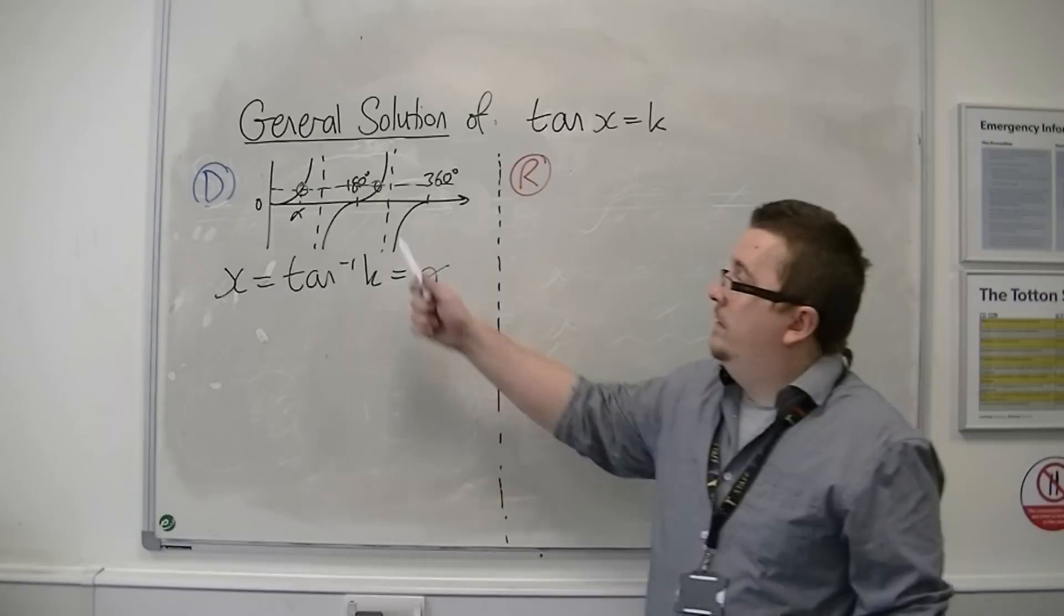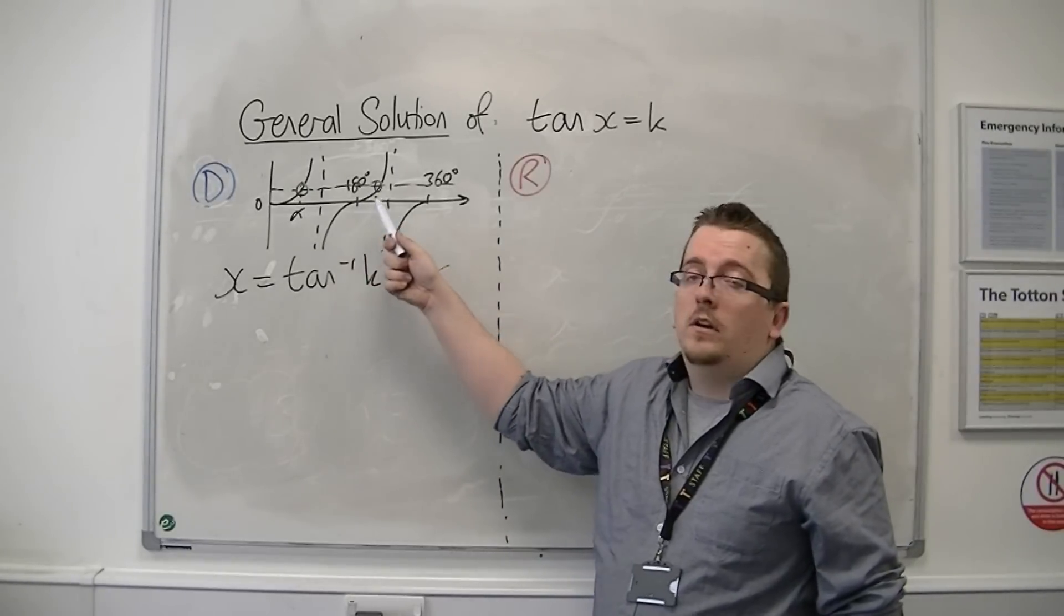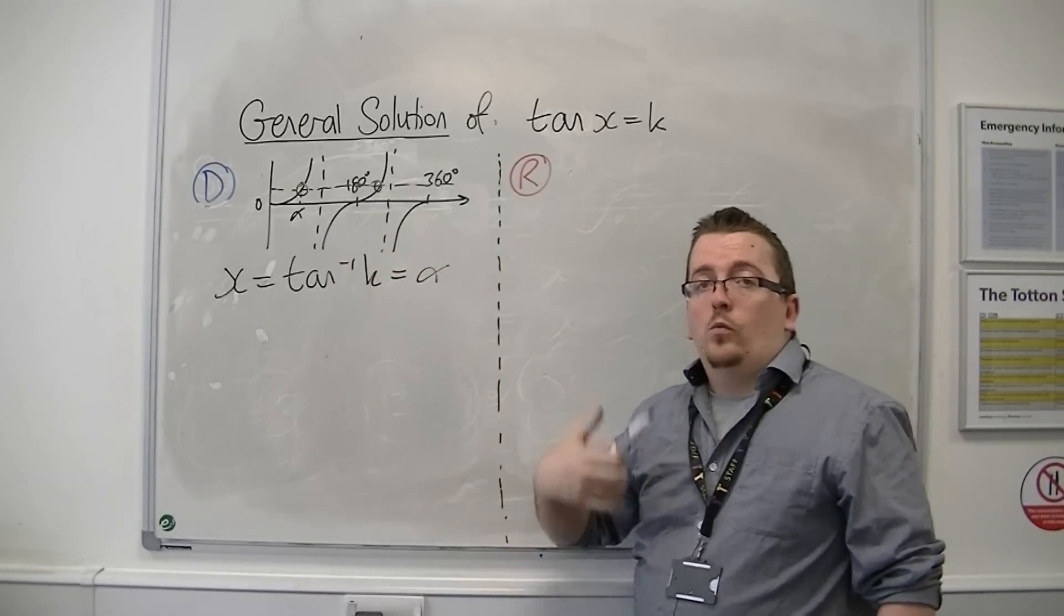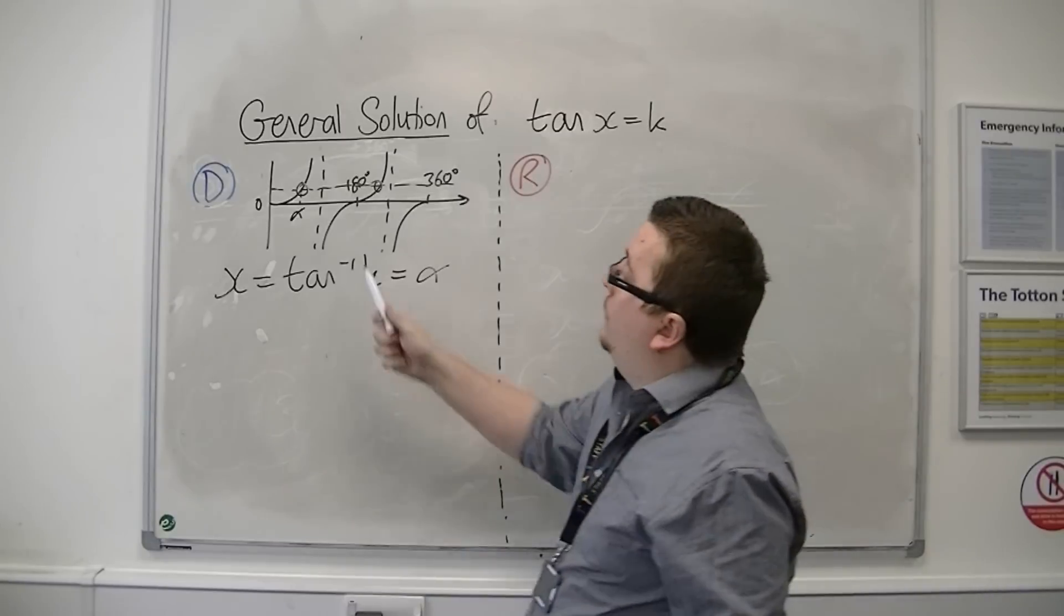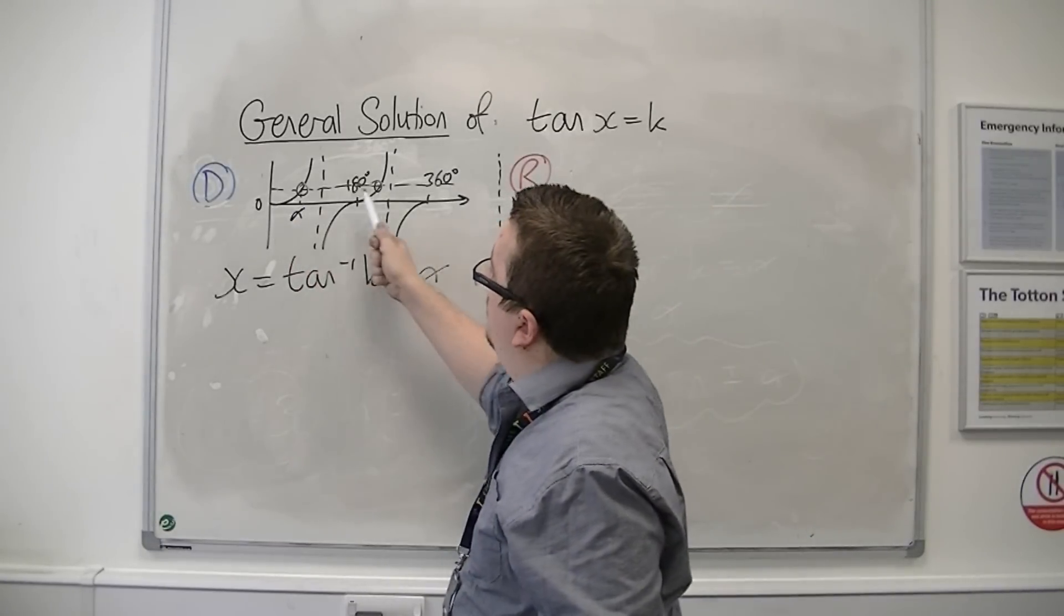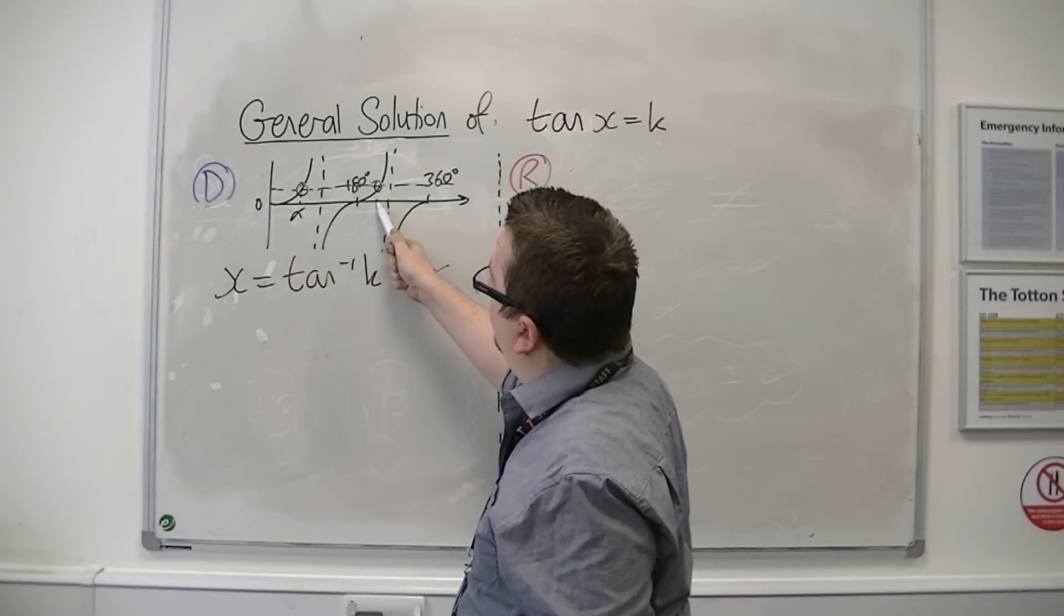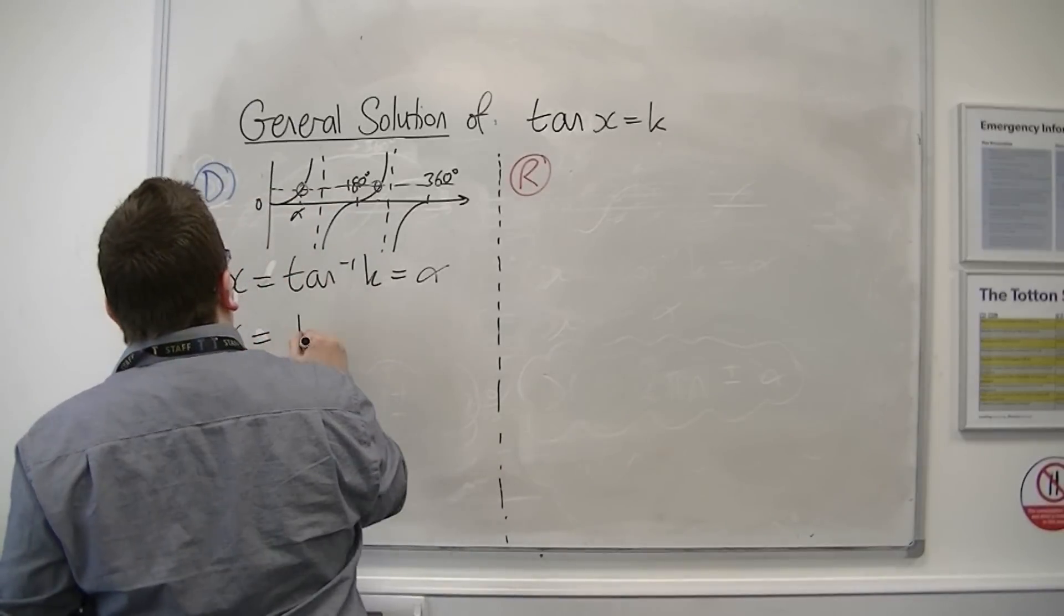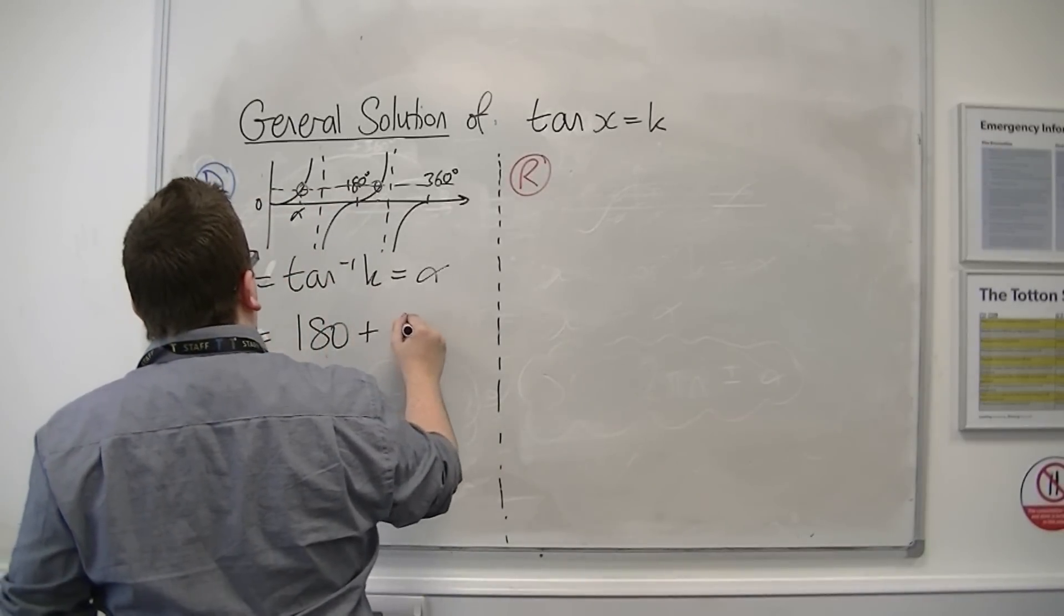Now to get the second solution, we would add 180 degrees to it. Because if that distance is alpha, then this distance is also alpha. So the second solution can come from 180 plus alpha.